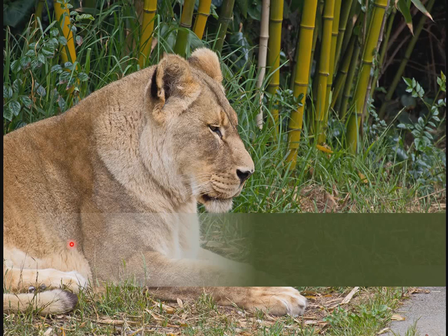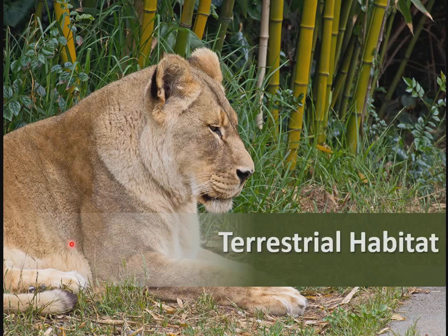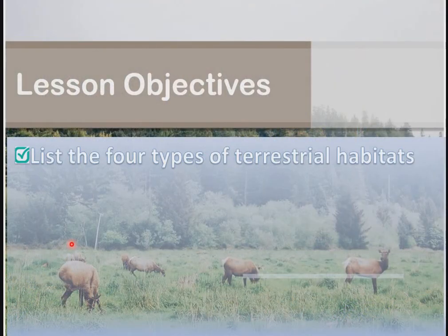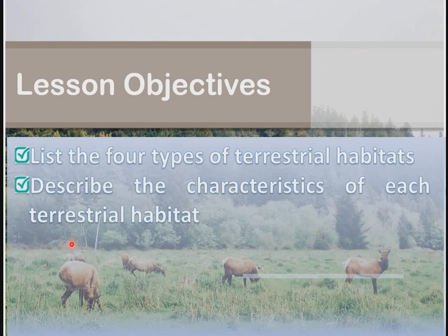Hello students, welcome again to our biology class. This week in our lesson we'll be looking at the terrestrial habitats. Last week we looked at the aquatic habitats, so this week we'll be concentrating on the terrestrial habitats. Our learning objectives: at the end of this class you should be able to list four types of terrestrial habitats and describe the characteristics of each.